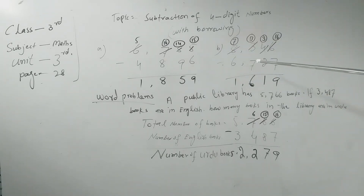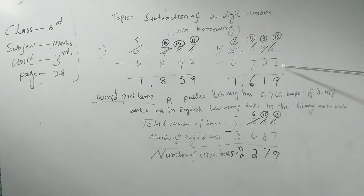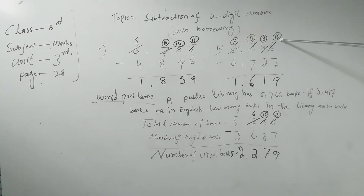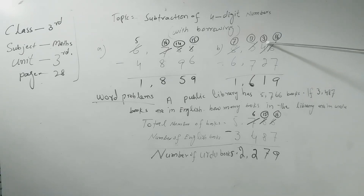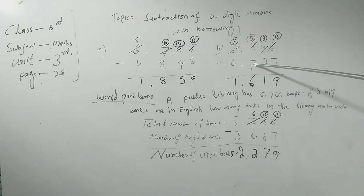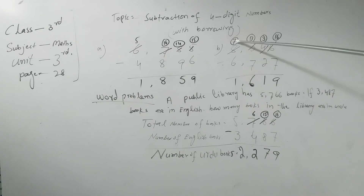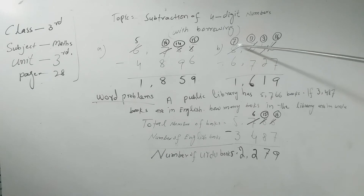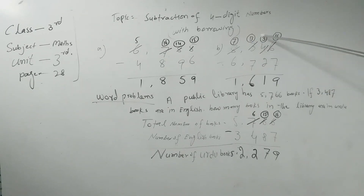Question two: 8346 minus 6727. Six minus 7 — borrow: 16 minus 7 is 9. Then 7 minus 1 is 6. Working through the borrowing step by step, count each digit carefully.